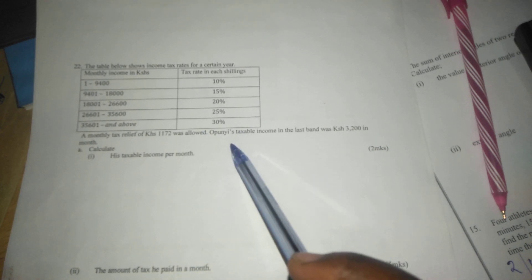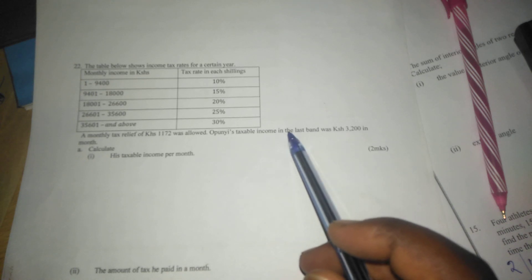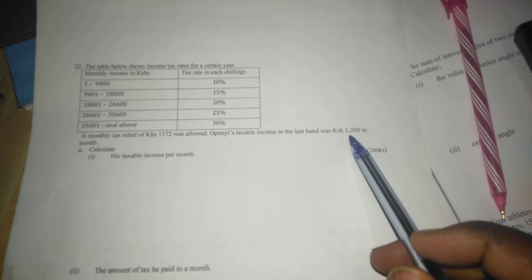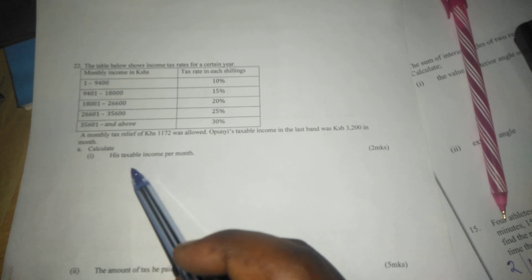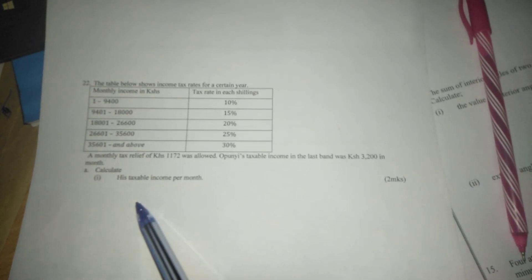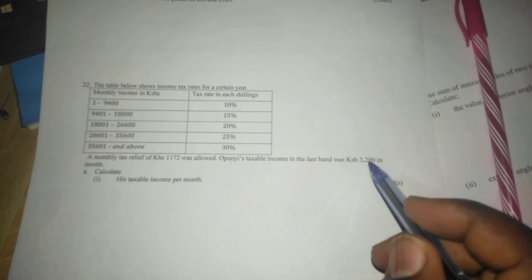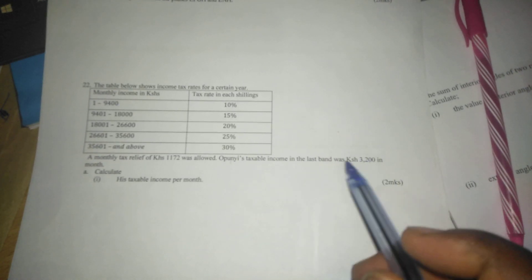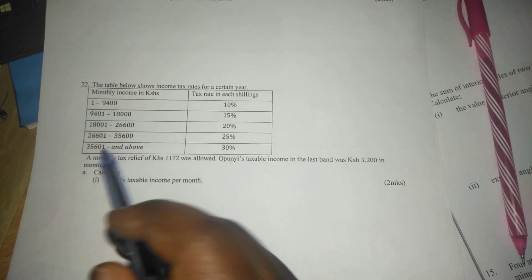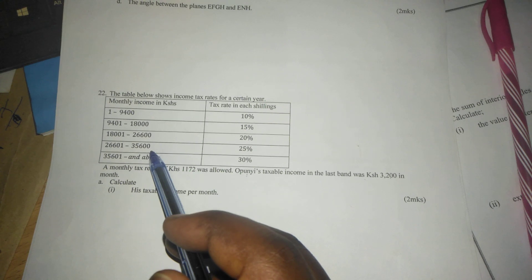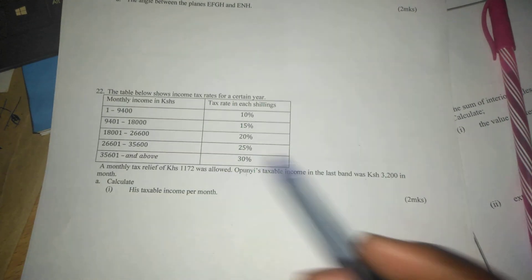Opuni's taxable income in the last month was 3,200. That is, the taxable income for this gentleman called Opuni which lies in the last band is 3,200. Within this bracket we have 3,200, which means after 35,600 the extra amount is 3,200.